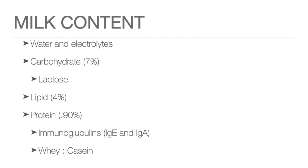Human milk has two types of proteins: 60 percent whey and 40 percent casein. This proportion is important to allow quick and easy digestion. Immunoglobulin is another important protein component to protect infants from bacterial and viral infections. Colostrum is the first milk produced in the first few days of an infant's life and has high levels of protein, minerals, and immunoglobulins that provide passive immunity for the baby.